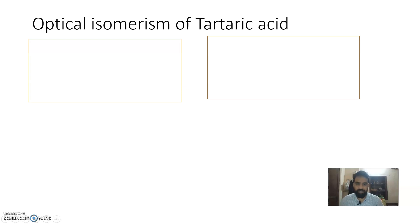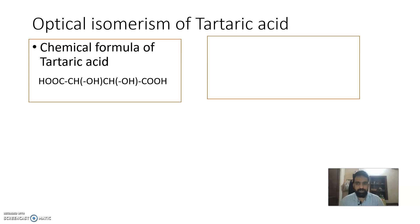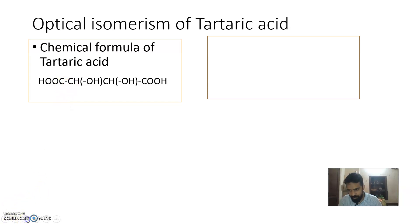Let us discuss optical isomerism of tartaric acid and lactic acid. The formula of tartaric acid is COOH-CHOH-CHOH-COOH. There are four carbons in total. Now, how many chiral carbons are there? The terminal carbons with the double bond to oxygen (COOH groups) are not chiral carbons.